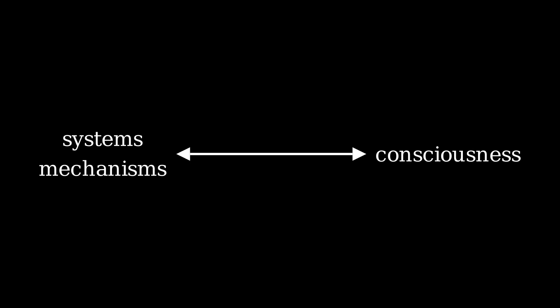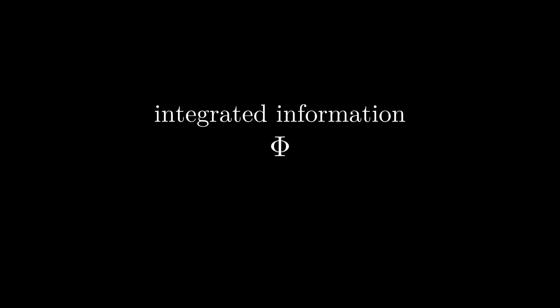We'll discuss a fair amount of details further in this series. But the general idea is that in order to evaluate the potential for consciousness of a system, IIT uses the concept of integrated information, which makes sense given it's in the name of the theory. The information aspect is about how much a part of the system makes a difference for the system as a whole, and the integration aspect has to do with how much the collaboration between parts generates information that the parts alone cannot. The amount of integrated information in a system is represented by the Greek letter phi. Technically, in IIT there's a difference between lowercase phi and uppercase phi, but we'll use just one for now.